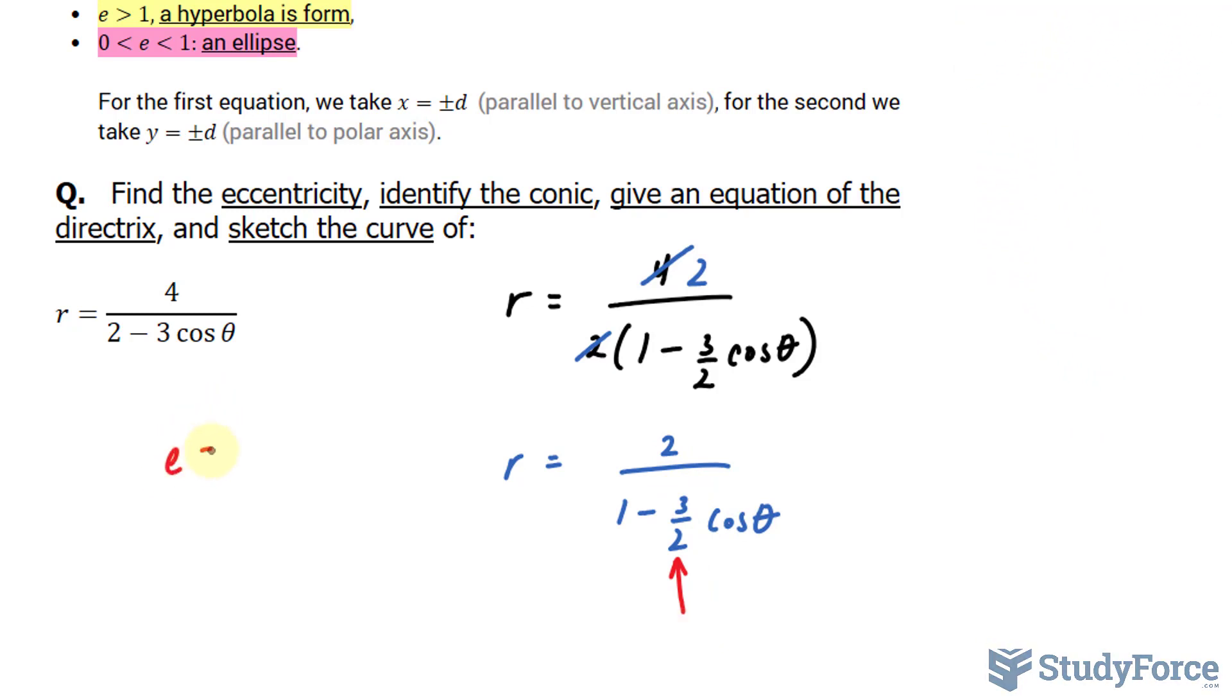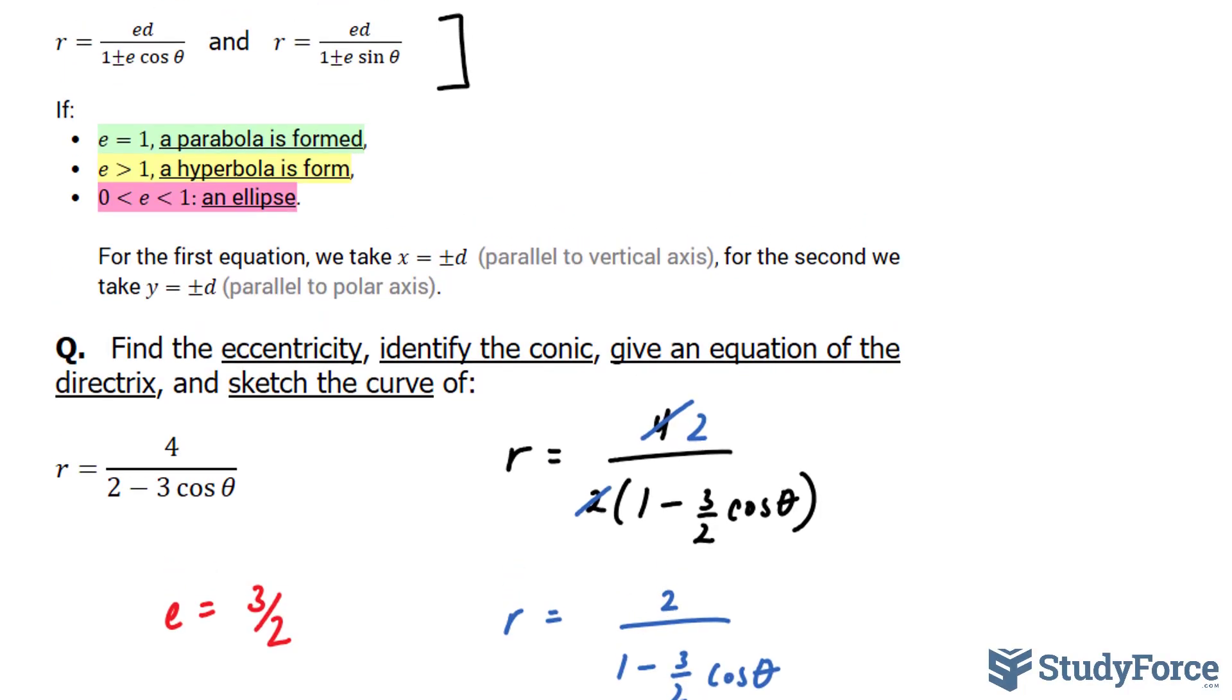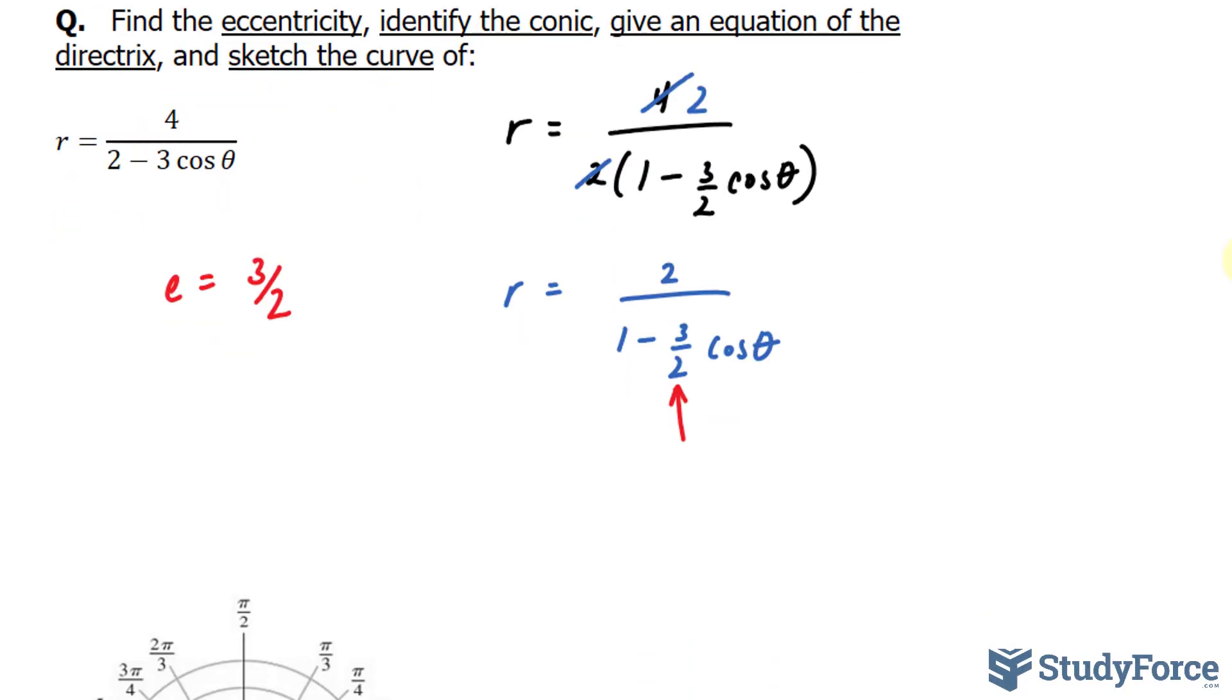So I can write down e equals three over two. Now because three over two, which is equivalent to 1.5, is greater than one, this is a hyperbola.